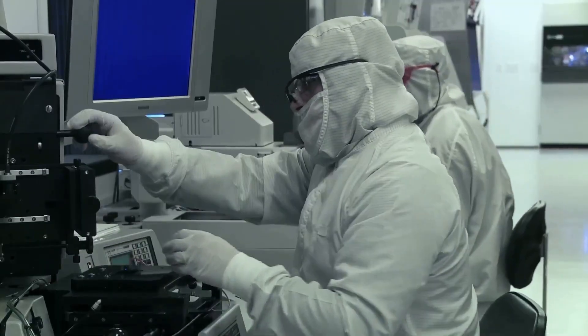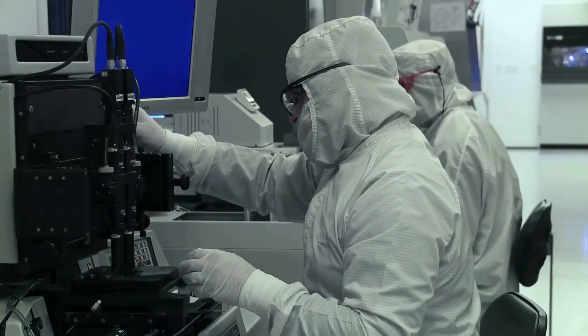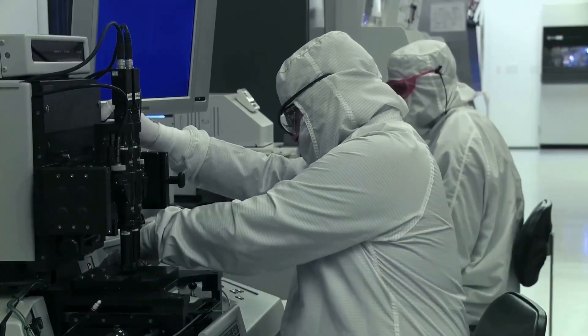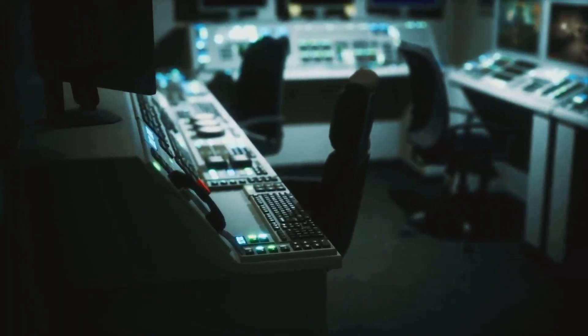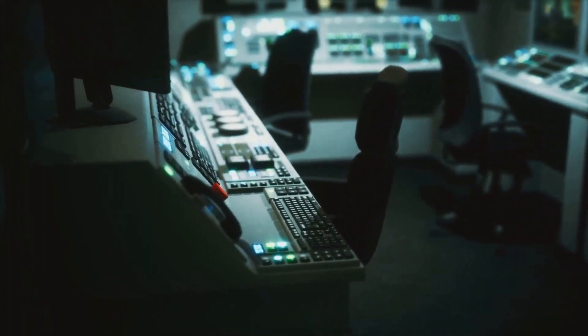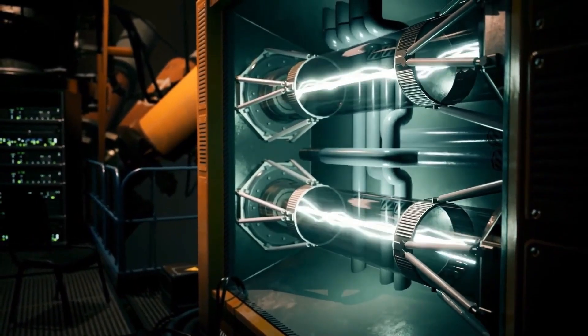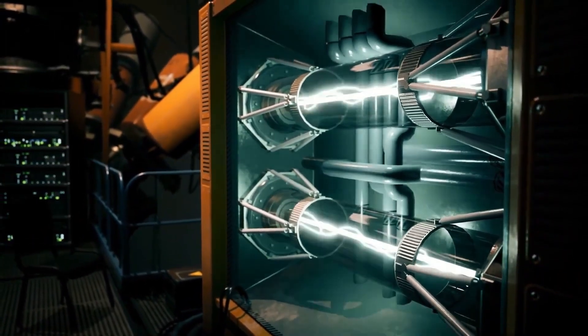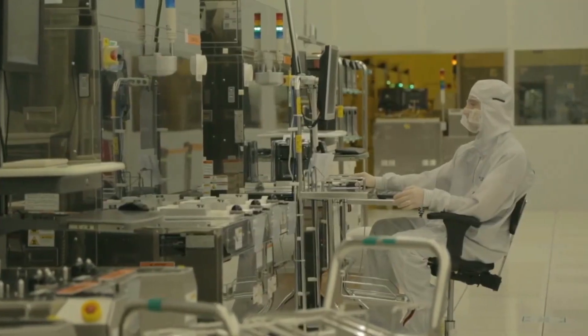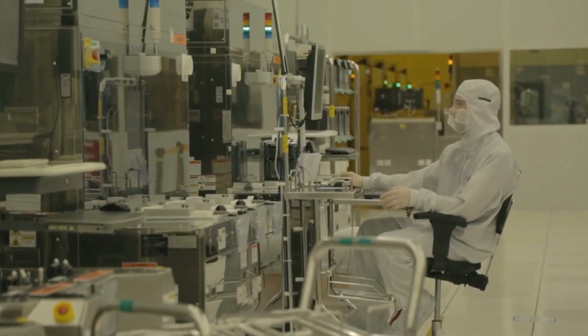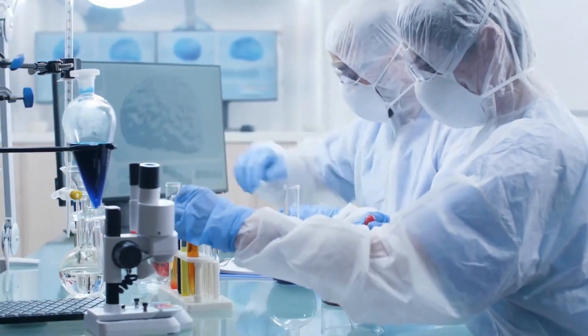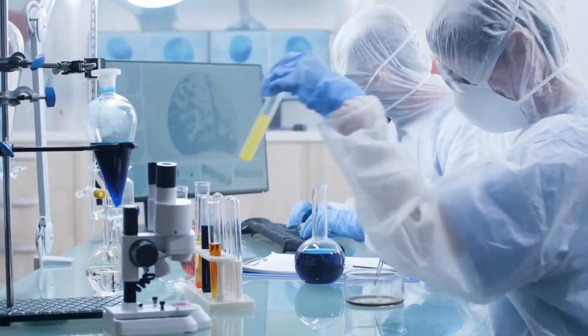Instead of copying the Western method, Chinese scientists created something entirely different. Their system starts with a high-power crystal amplifier. The beam is split, each part is converted into new wavelengths, and then both beams are combined to produce exactly 193nm. This avoids relying on rare gases and reduces the complexity of the system.